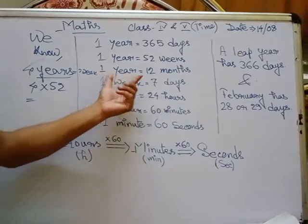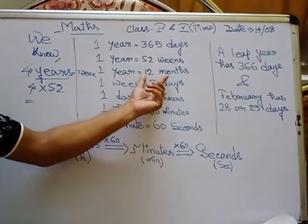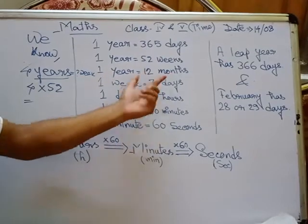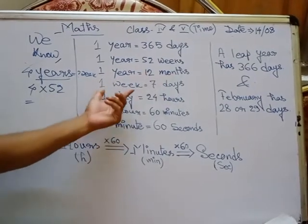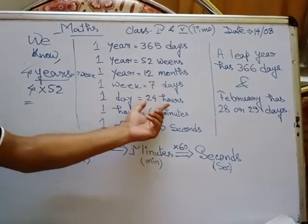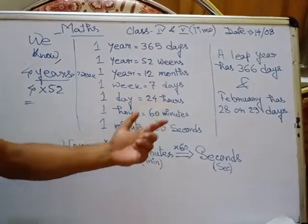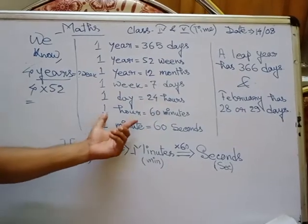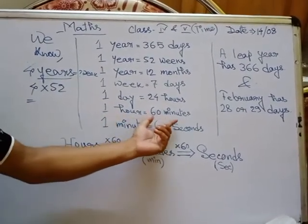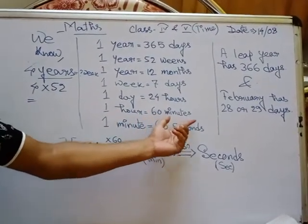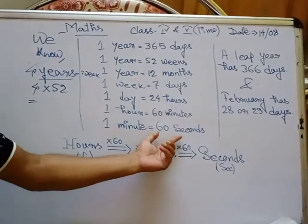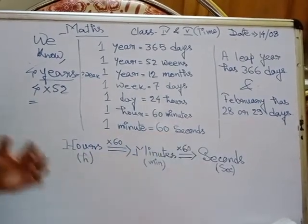1 year is equal to 12 months. 1 week is equal to 7 days. 1 day is equal to 24 hours. 1 hour is equal to 60 minutes, and 1 minute is equal to 60 seconds.